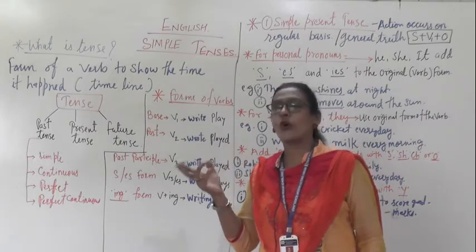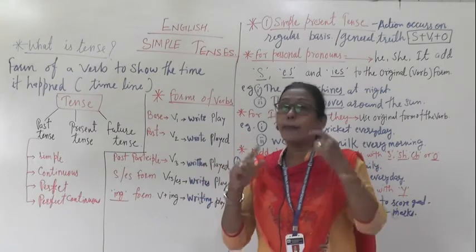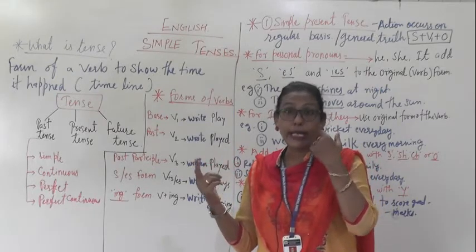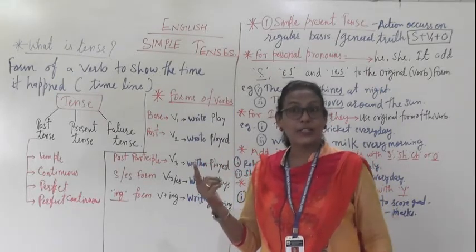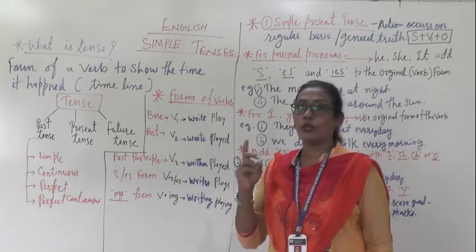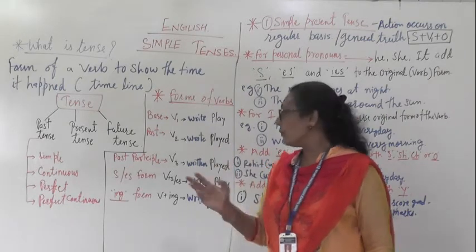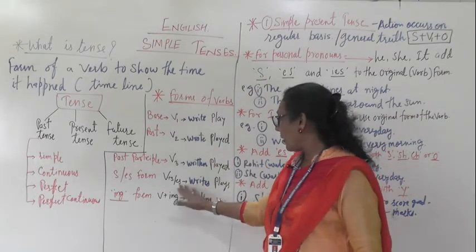More examples: go, went, gone — V1, V2, V3. Play, played, played — V1, V2, V3. In this way we have V1, V2, V3 forms for different verbs.